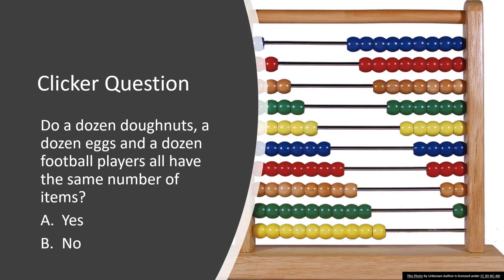So if you have a dozen donuts, a dozen eggs, and a dozen football players, do those dozens all have the same number of items in them? Well yes, because a dozen means that you have 12 of something. A dozen is a basic counting unit.